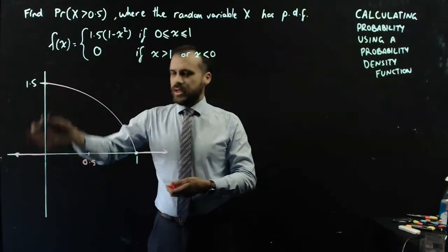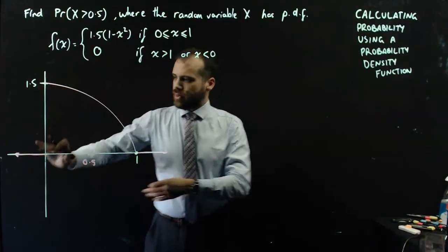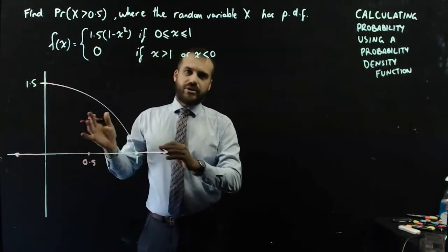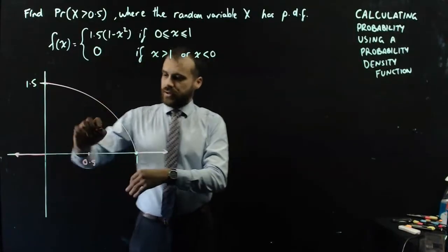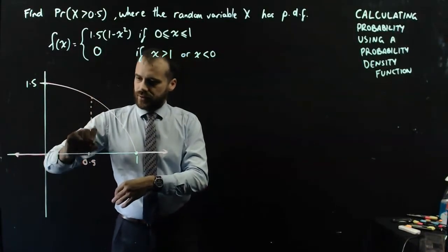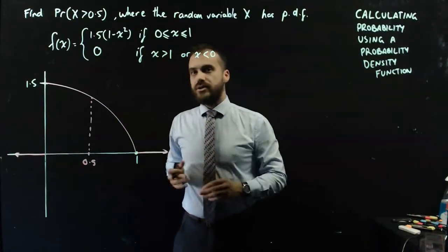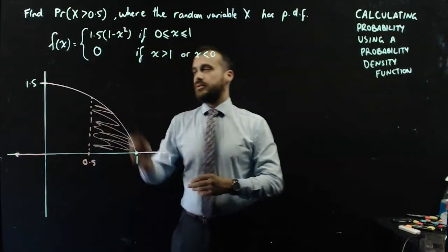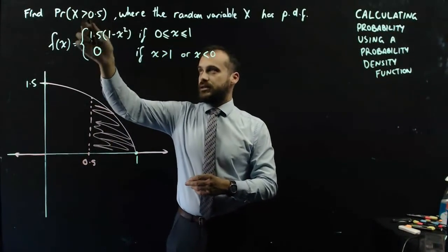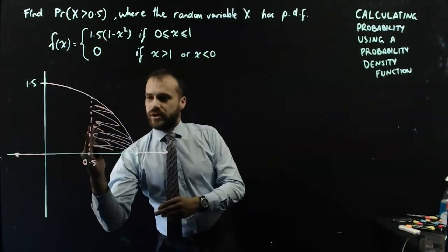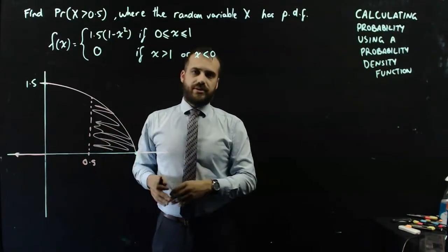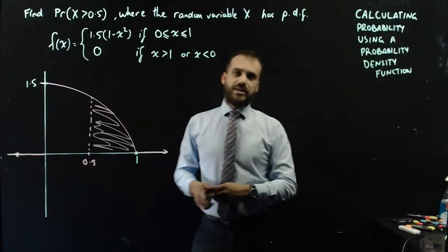Now, these numbers here, we don't really talk about what these numbers are worth because they're not very useful. But what we can say is that the area under the curve between 0.5 and 1—x is greater than 0.5—that's going to be our probability there. So we need to find the area under that curve.